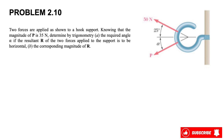We are going to use the triangle rule and law of sines in order to find what the question is asking in these two sections. We have force 50 newtons making 25 degrees with the horizontal, and if we use the triangle rule we have force P as well.